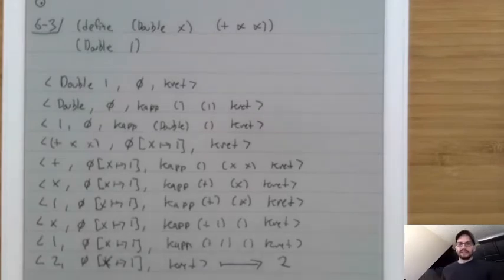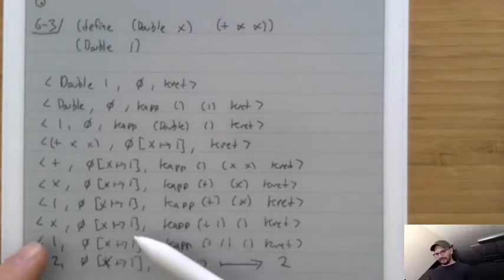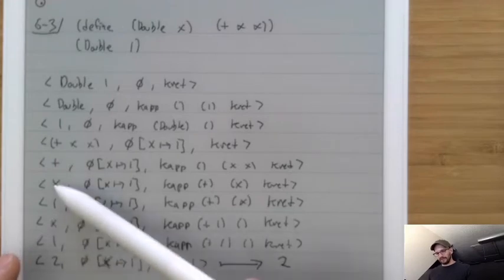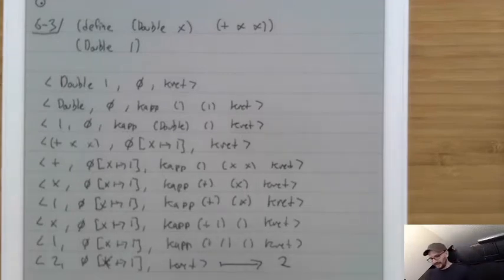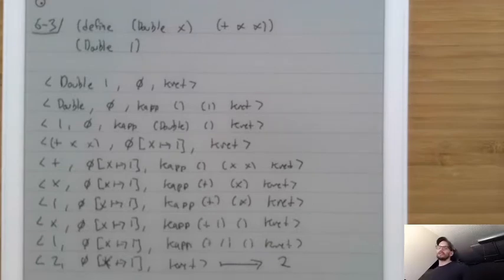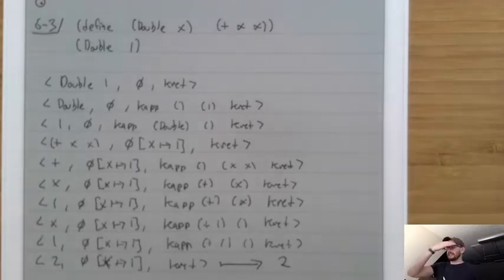Notice we didn't have any linear steps, except for the variable lookup which is linear in the number of variables. But we can make that efficient by using a hash table instead of a linked list — giving O(log n) with a tree or O(1) with a hash table. So it's totally fine.